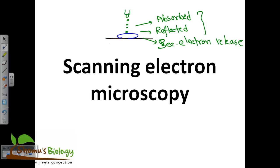By detecting all these different varieties of electrons, we can tell about the surface structure of the sample, as well as the composition and type of the sample, depending upon the percentage of all these varieties of electrons. Electron microscopy can be divided into two parts: scanning electron microscopy (SEM) and transmission electron microscopy (TEM). Why it is called scanning electron microscopy? Let's figure that out.